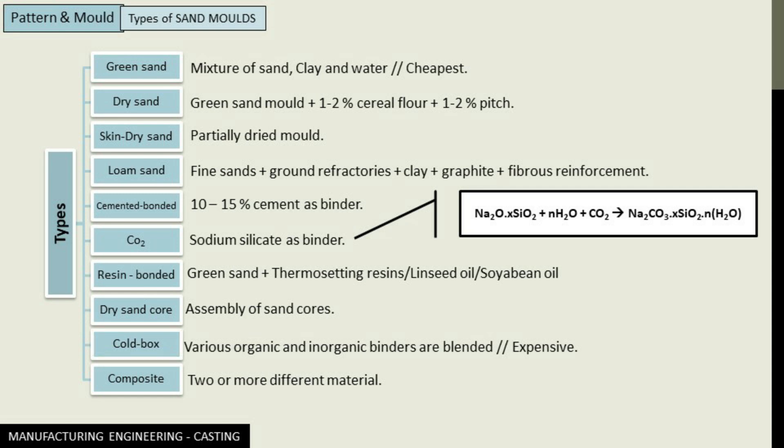And last but not the least, we have composite molds. This kind of molds are made of more than two materials such as shell, plaster, sand with binder, and graphite.